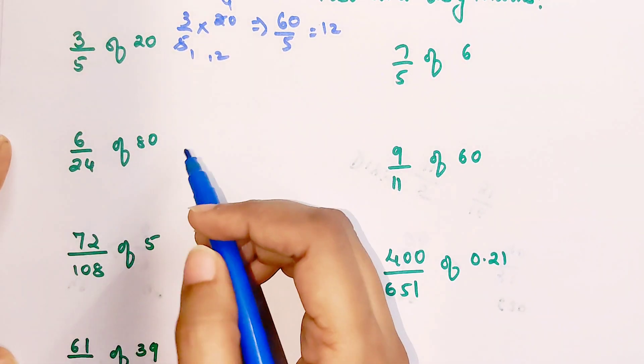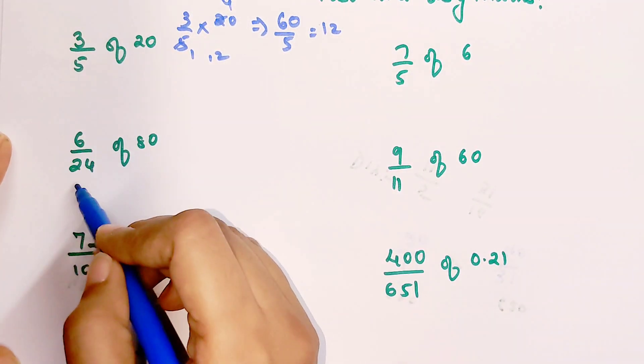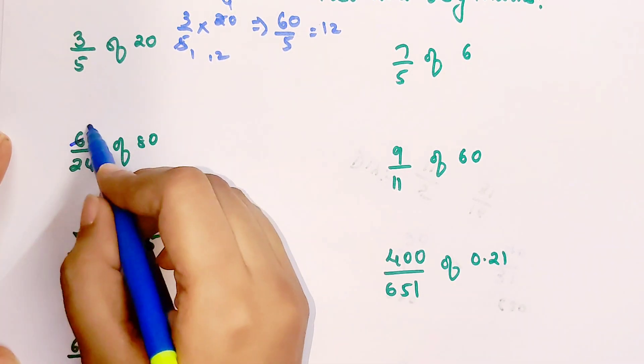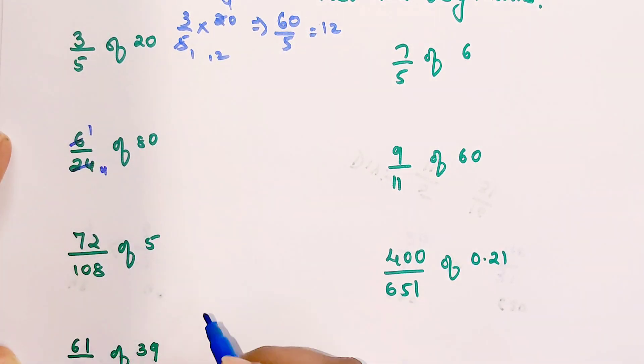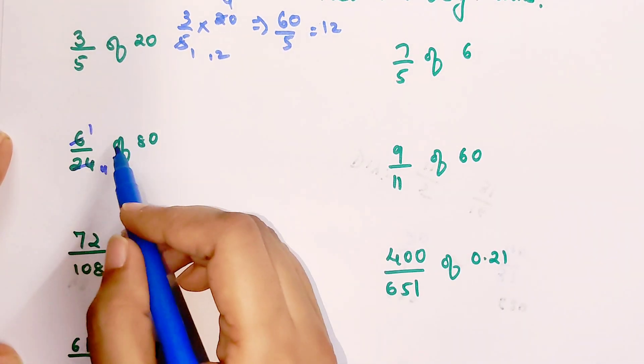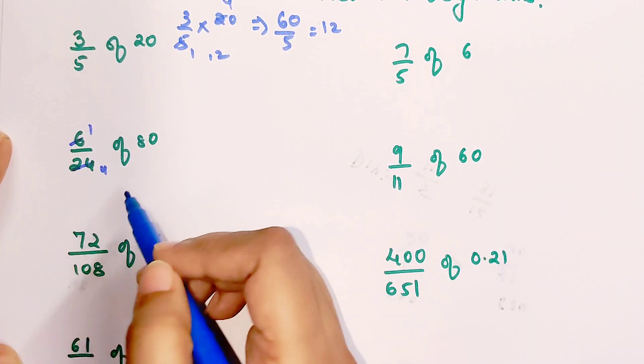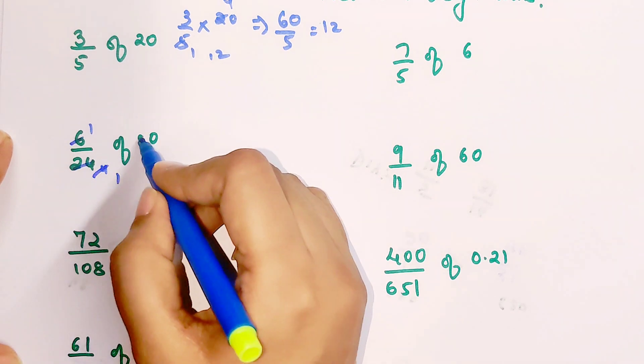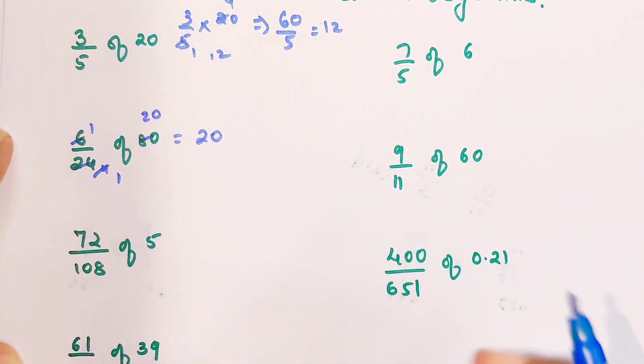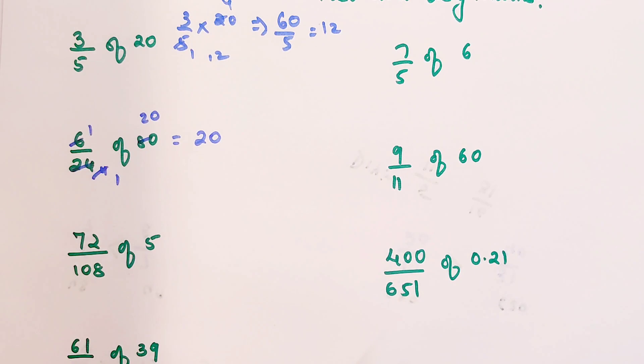Over here we have 6 upon 24 of 80. We know 6 fours are 24 and 4 twenties are 80, so your answer is 20.